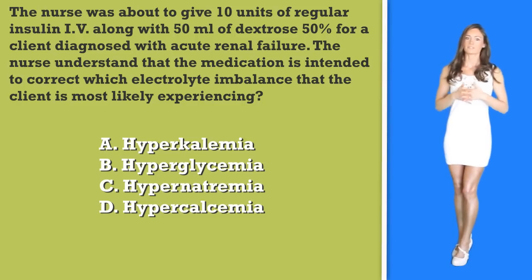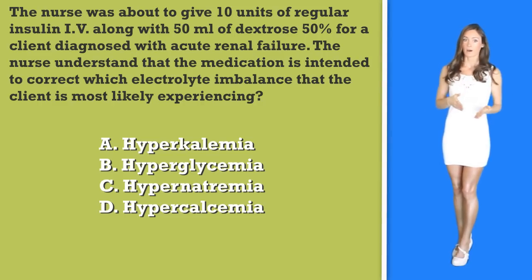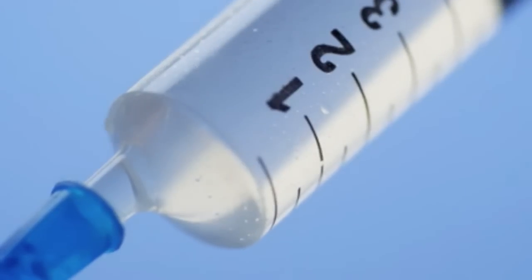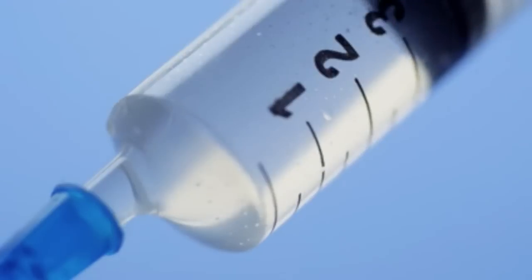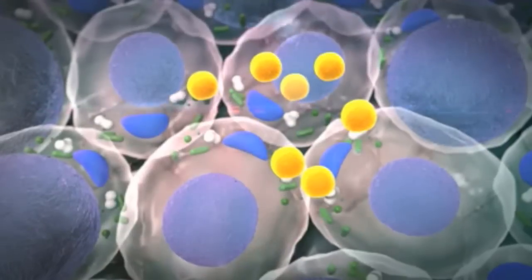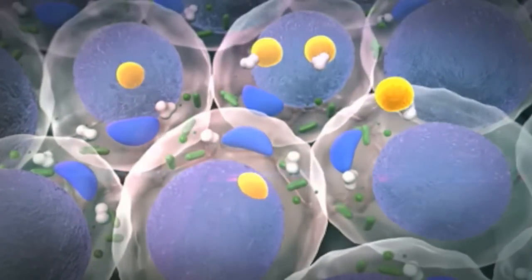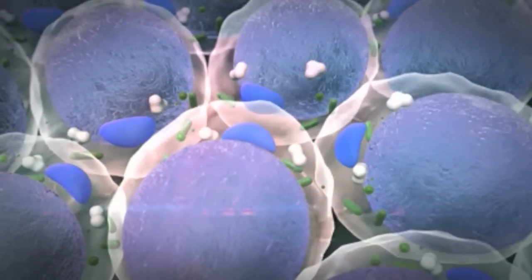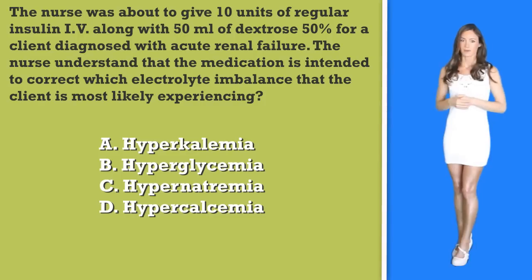In kidney failure, potassium levels in the blood may be increased because of the loss of ability by the kidneys to excrete the extra potassium out of the body. Regular insulin given intravenously with 50 milliliters of dextrose 50%, also given intravenously, helps shift the potassium from the extracellular fluid into the cell, which normalizes the serum potassium levels in your client with hyperkalemia.